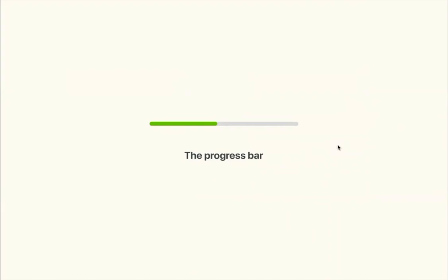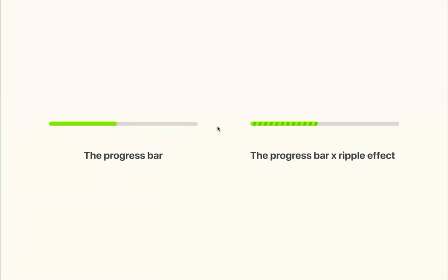We've all experienced progress bars in applications or registration flows. Five out of ten times, the bar gets stuck and users have no idea whether to leave. But if you represent loading with a ripple effect, users tend to think it's still progressing and will wait. Studies show progress bars with a ripple effect appear 11% faster than the original, because users see animation and think it's still working.